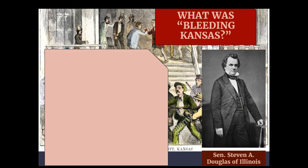Our first left side question today is about specific events that led to the Civil War. We've already learned about the compromises made to try and avoid the Civil War, and a little bit about the nullification crisis in South Carolina. Our first left side question today is: what was Bleeding Kansas? This is a term used to reference a situation that occurred in Kansas and a little bit in Nebraska as well.